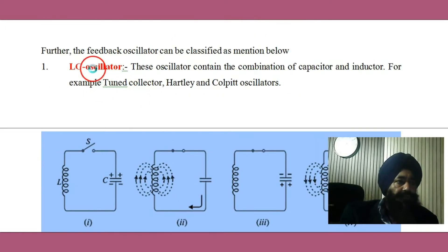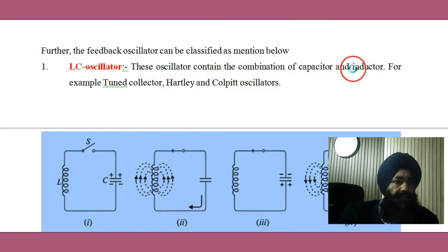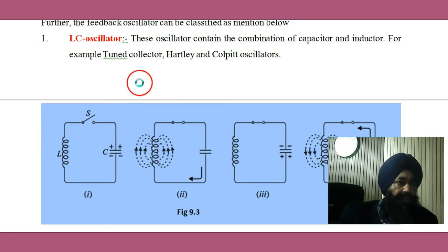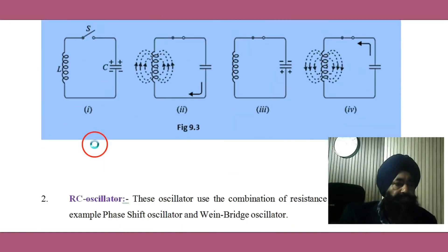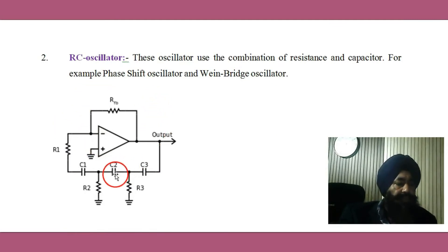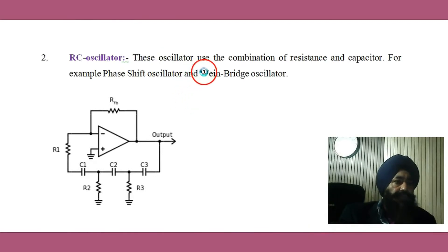For feedback oscillators, the classification includes LC oscillators. LC oscillators use a coil and capacitor in parallel, sometimes called the tank circuit. These circuits contain a combination of capacitor and inductor. Tuned collector oscillator, Hartley, and Colpitts oscillators all use the LC combination. RC oscillators use a certain combination of C and R. These oscillators use combinations like C1R1, C2R3, and so on. The phase shift oscillator is an example of an RC oscillator.